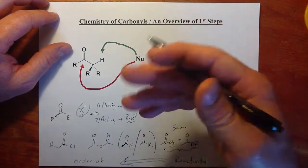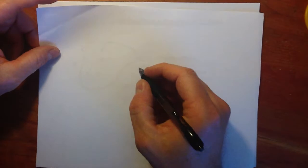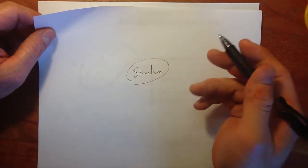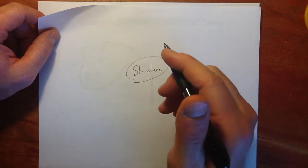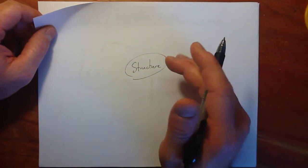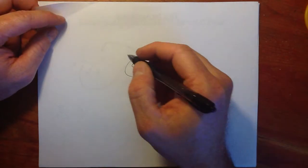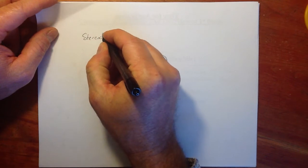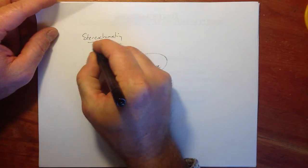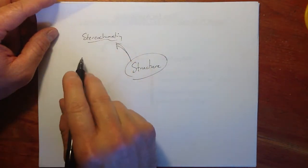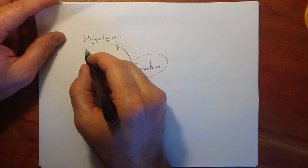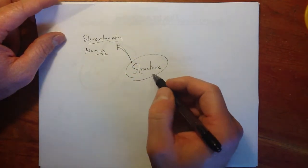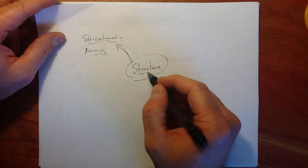In OChem 1, we looked at just structure and how if we understand structure well, we understand reactivity. We looked at stereochemistry of structures, naming of structures, and starting off with understanding resonance forms, partial charges, acidity, and basicity of structures.